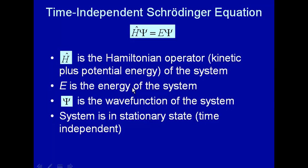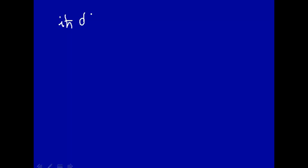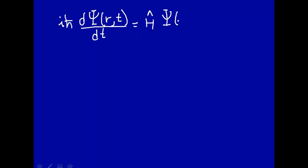In one of the postulates for quantum mechanics we talked about earlier, we said that the time evolution of the wave function, which describes the system, is governed by the Schrödinger equation or a variant of the Schrödinger equation. Here we're going to talk about the time independent Schrödinger equation. The postulate was that i h-bar times how the wave function — a function of both position and time — depends on time, is equal to the Hamiltonian operator H, which corresponds to total energy, times the wave function of r and t. We want to go from this equation to one which gives us the time independent Schrödinger equation, which will give us wave functions that are time independent — the so-called stationary states.